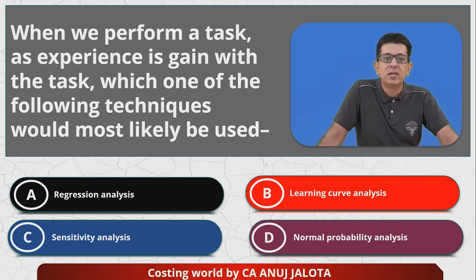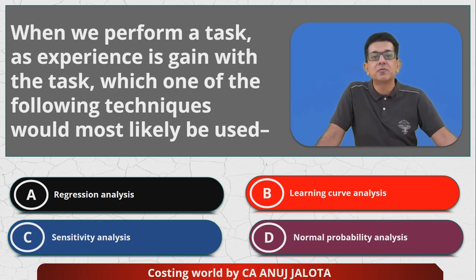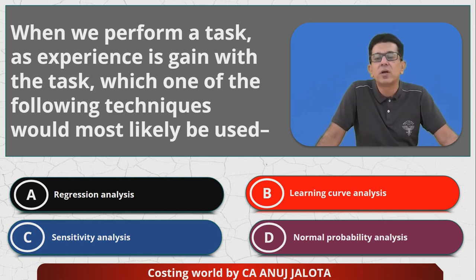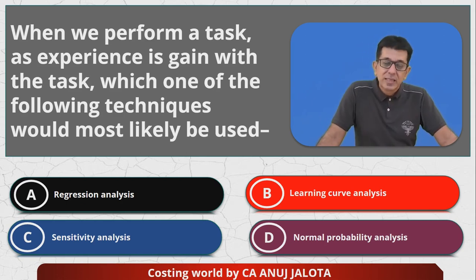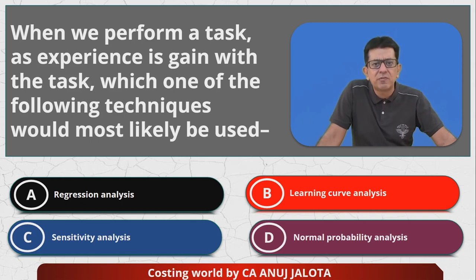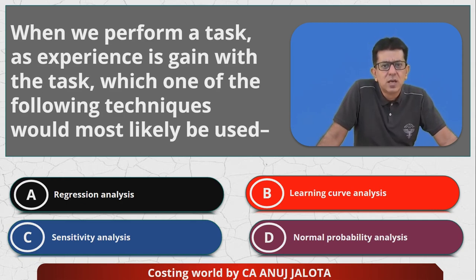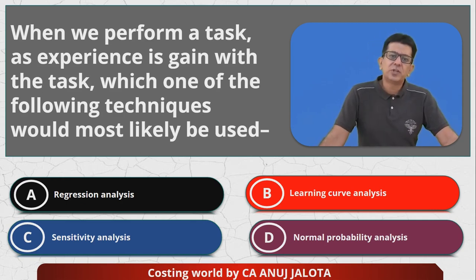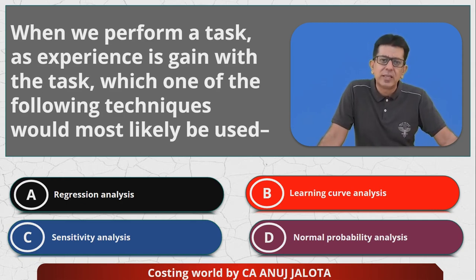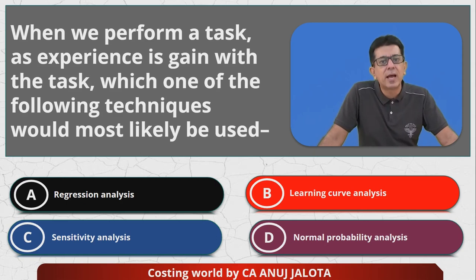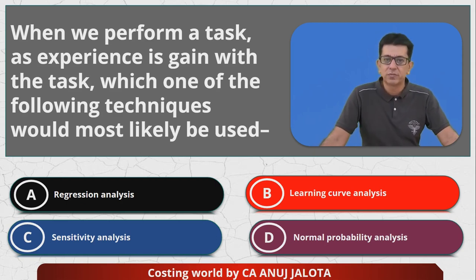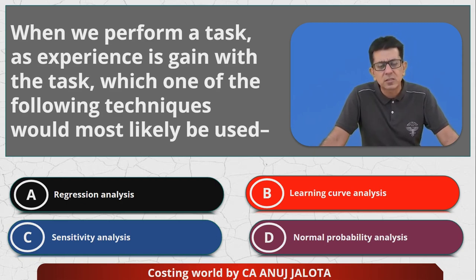Think of it this way — in CA Inter, when you studied costing for the first time, you might have taken 200 hours. The next time you revised it, you might have finished in 100 hours. If you revised it a third time, you might have finished the entire costing in just 50 hours.